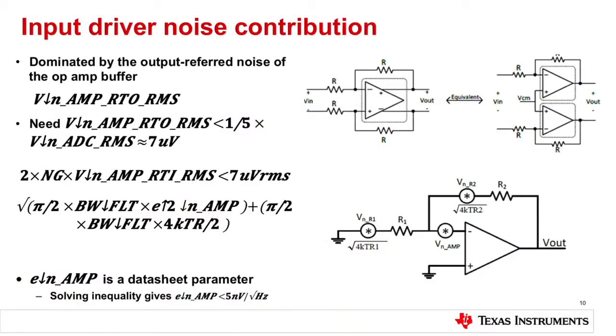Moving on to the input driver noise contribution: you have two components — the voltage noise of the op-amp multiplied by the pi-over-two factor of 1.57 and the bandwidth, all under the square root in RSS (root sum square) fashion. You then add any Johnson noise — resistor noise — the 4kTBR term, again multiplied by that pi-over-two factor of 1.57. That's for the first-order filter. So really nothing fancy except to carefully hand-pick the proper op-amp.